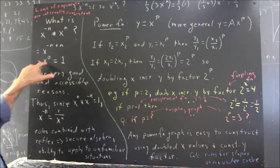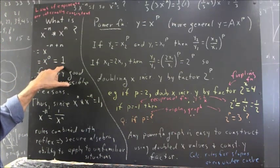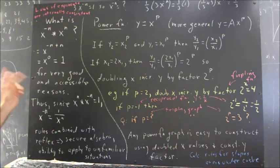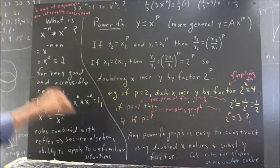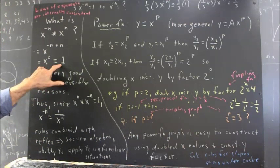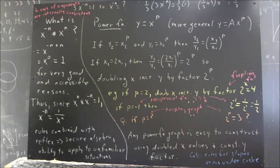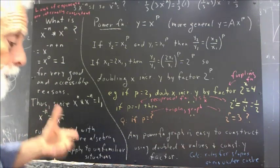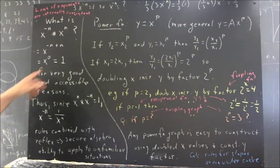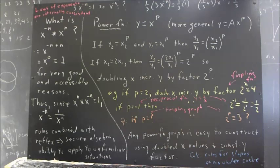It follows that x to the zero has to be one. Since x squared times x to the zero equals x squared and x squared times one equals x squared, x to the zero must be one. Just another instance of a law of exponents that's laid down as if on stone tablets when you could think a little more deeply and understand the consistency of those laws and make your algebra much more reliable and powerful.